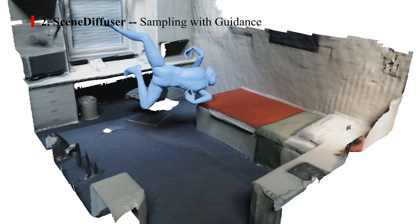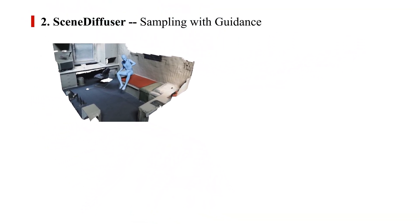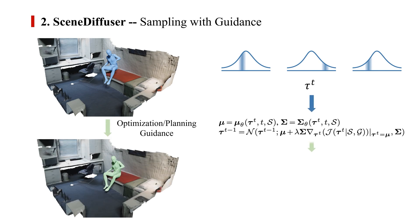Here is an illustrative visualization of the Scene Diffuser. During inference, Scene Diffuser injects optimization or planning guidance into each denoising step, guiding the denoised trajectory toward the expected distribution.